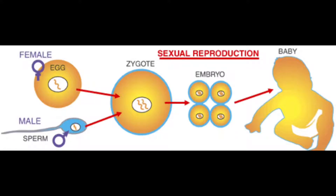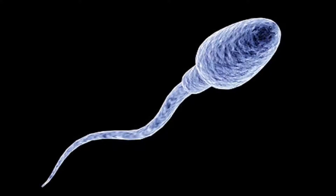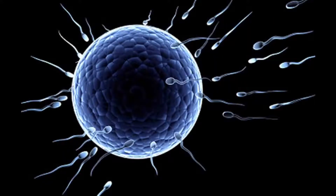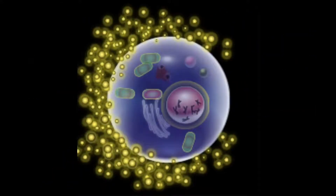Sexual reproduction requires the production of sex cells, one from each parent. The male sex cell is a sperm, and the female sex cell is an egg. Here's a photo of a sperm, and here's a photo of an egg.